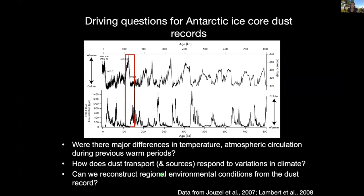There's a really nice relationship documented between climate and dust in the ice core record. Here I'm showing a record from Dome C going back 800,000 years. On the top is the deuterium composition, a proxy for temperature, and on the bottom is the dust concentration. These records go back multiple glacial and interglacial cycles, and the dust concentration shows a tight relationship to temperature — during cold periods we have heightened dust transport, and during warm periods lower dust. Driving questions include: were there major differences in temperature and atmospheric circulation during previous warm periods? How does dust transport respond to differences in climate, and can we reconstruct regional environmental conditions from the dust record?